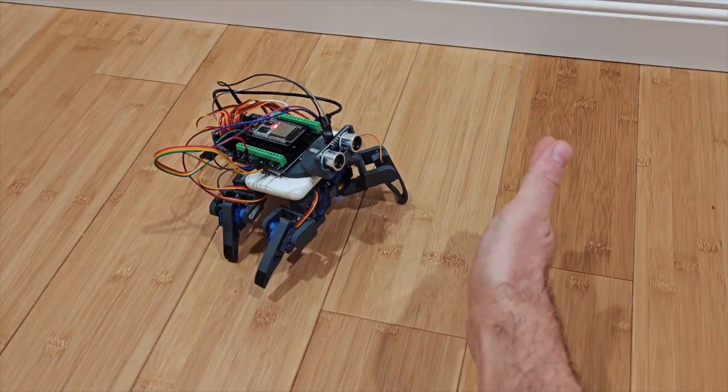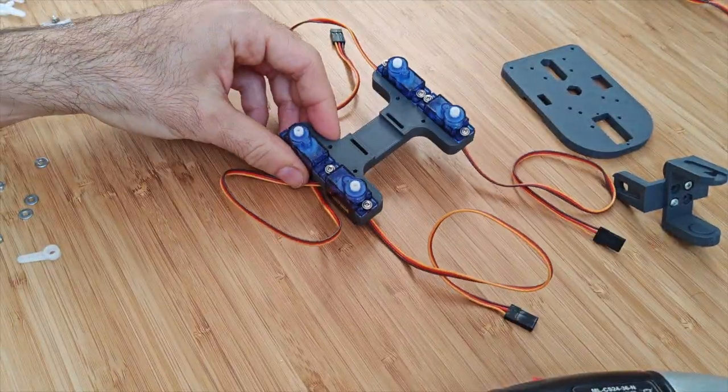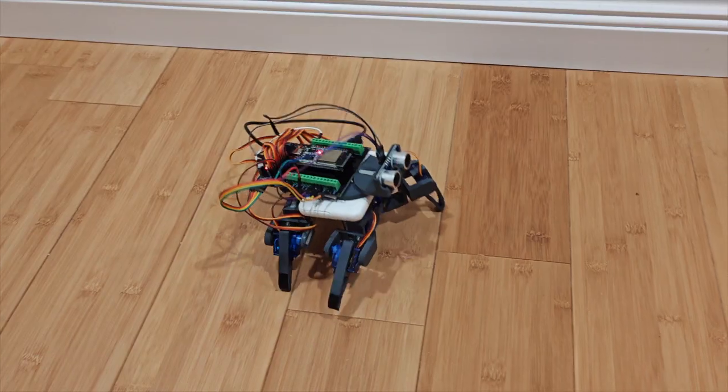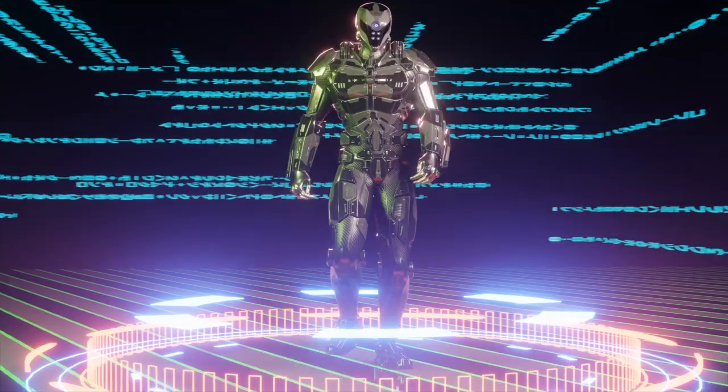Hello, thinkers. Remember the spider robot we built in a previous video? It has eight degrees of freedom, and we wrote a software capable to make it walk. But today, we're exploring a new idea.